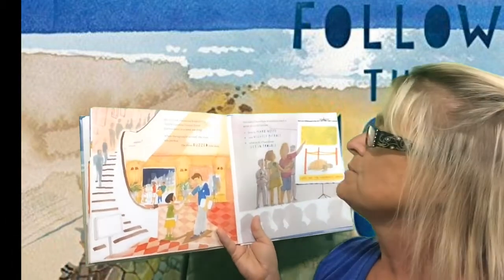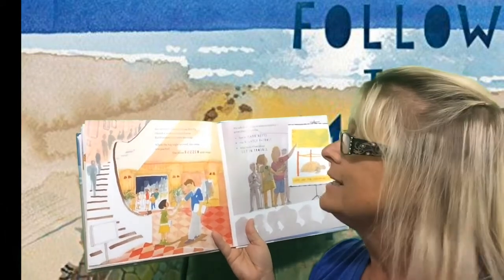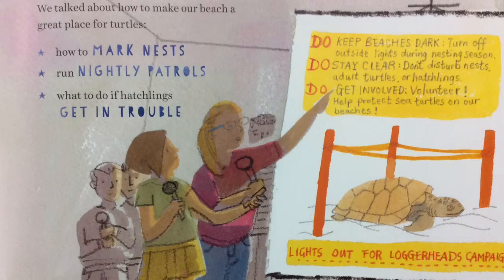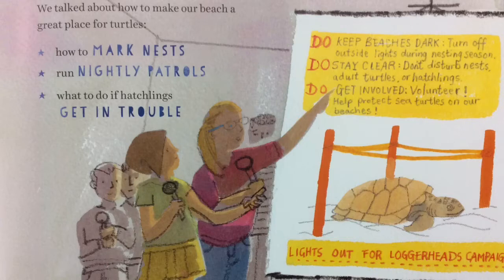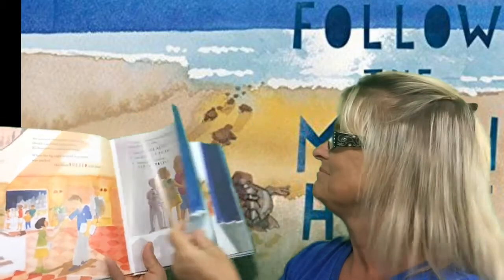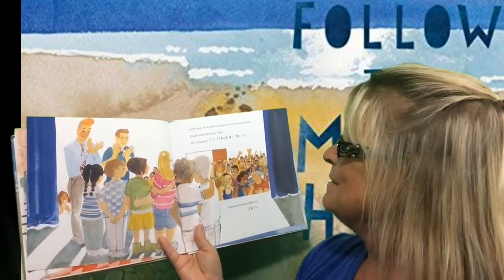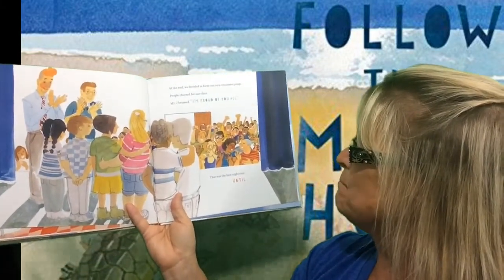We invited volunteers from SCUT — South Carolina United Turtle Enthusiasts — to a town meeting. When the big night arrived, the room was packed. The room buzzed with ideas. We talked about how to make our beach a great place for turtles — how to mark nests, run nightly patrols, what to do if hatchlings get in trouble. Do keep beaches dark, turn off outside lights during nesting season. Don't disturb nests, adult turtles, or hatchlings. And do get involved — volunteer, help protect sea turtles on our beaches. At the end, we decided to form our own volunteer group. People cheered for our class. Mr. J beamed. "And I am proud of you all." That was the best night ever.